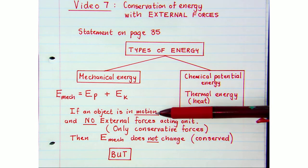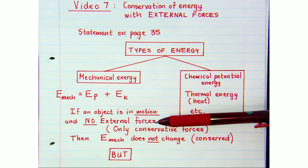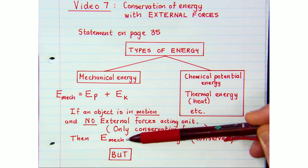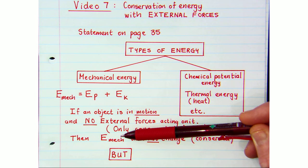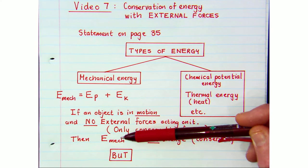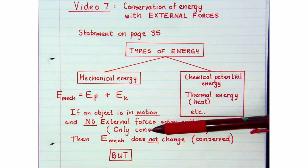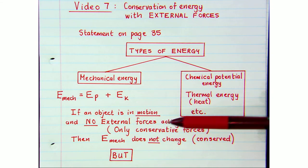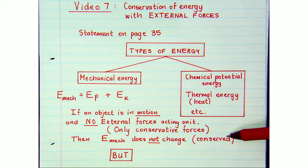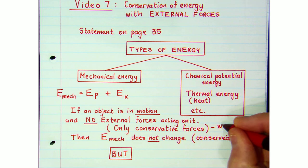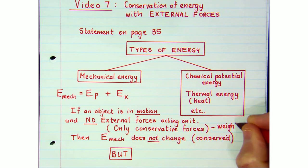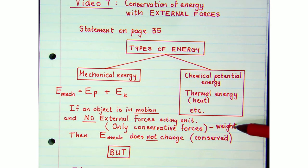If an object is in motion but there are no external forces acting on it, then the total mechanical energy of that object does not change. Forms of mechanical energy will change — gravitational potential energy can convert into kinetic energy — but when only conservative forces act on the object, the total mechanical energy is conserved. The gravitational force, and any components of it, are considered conservative forces.